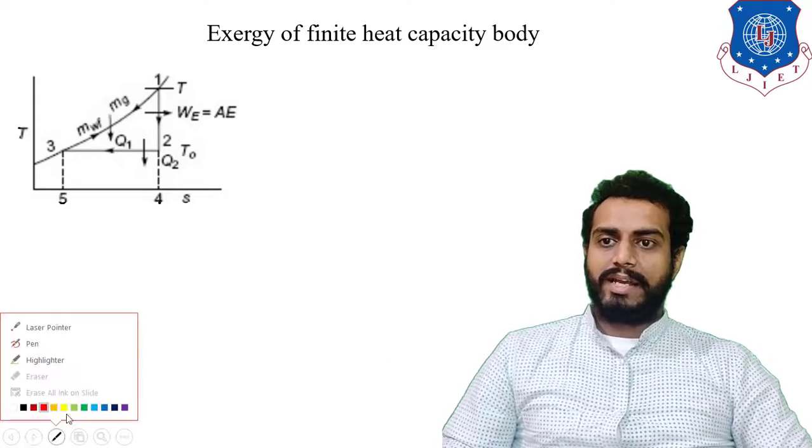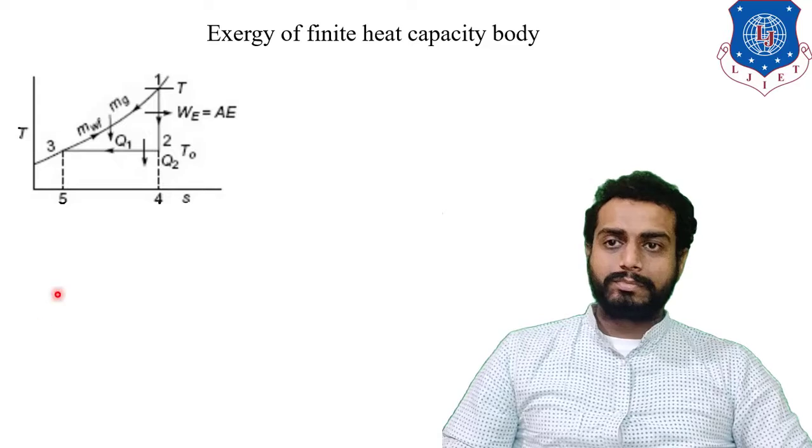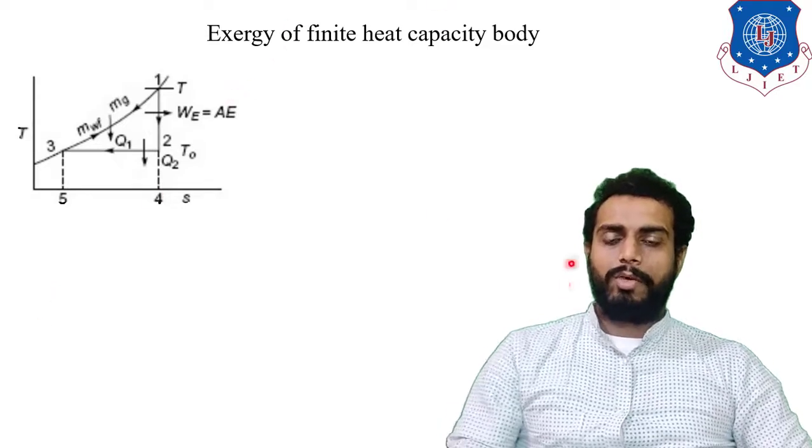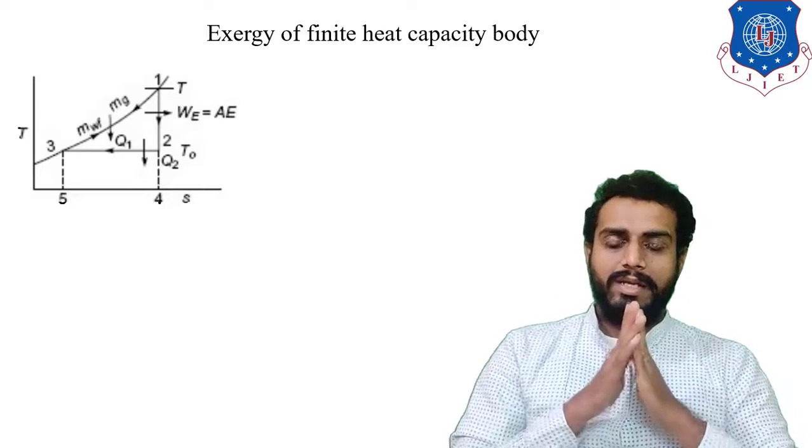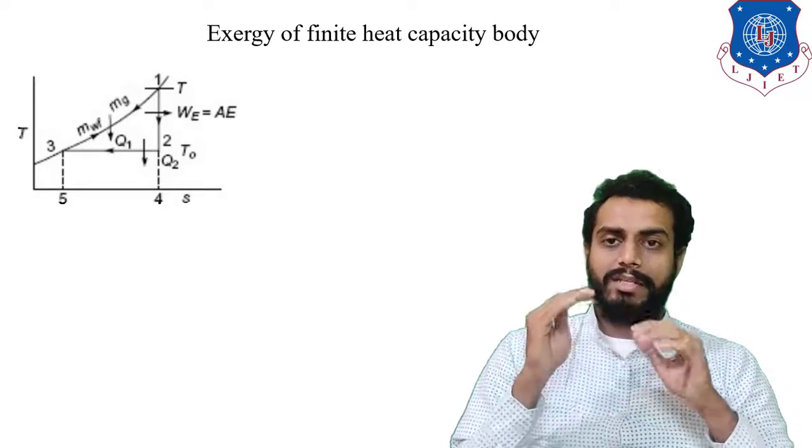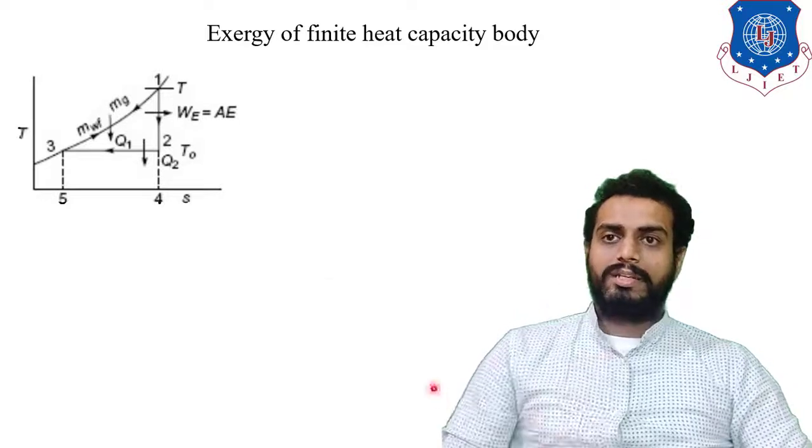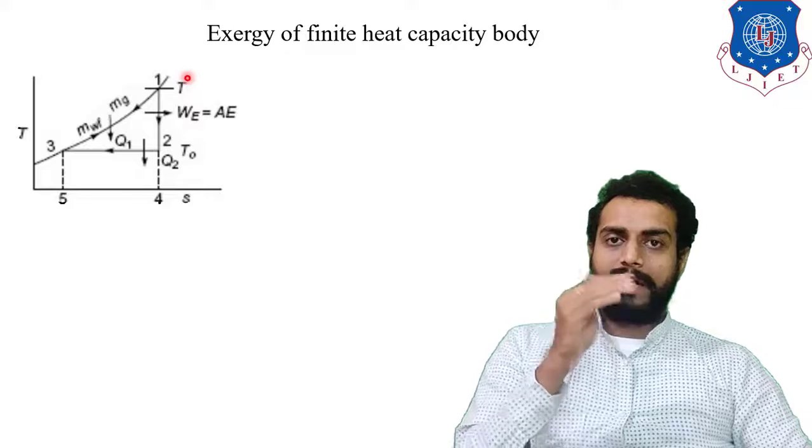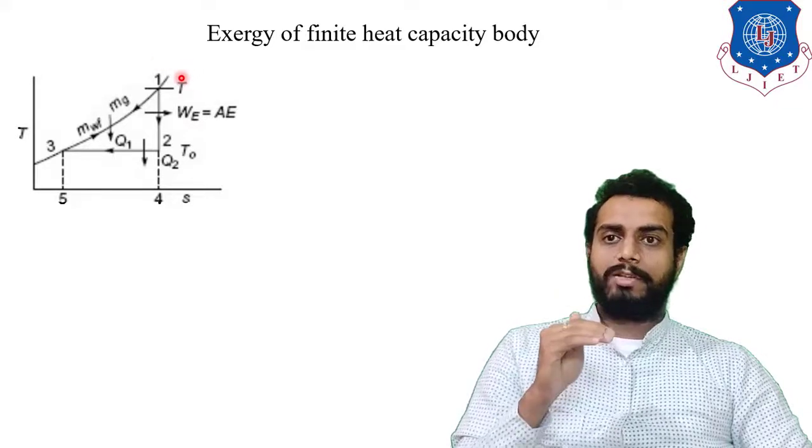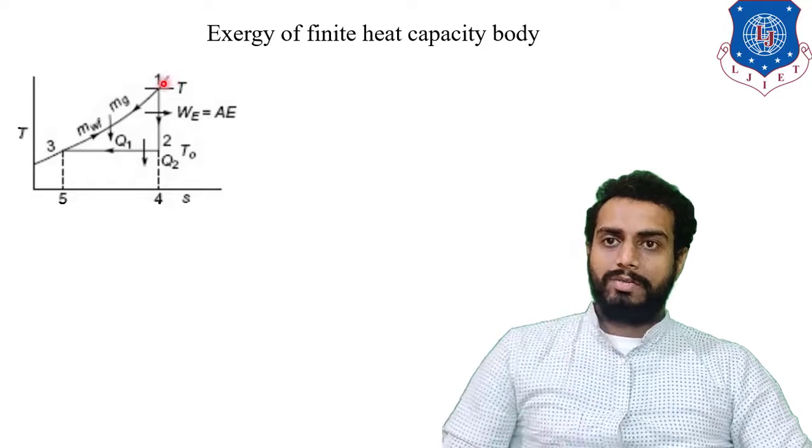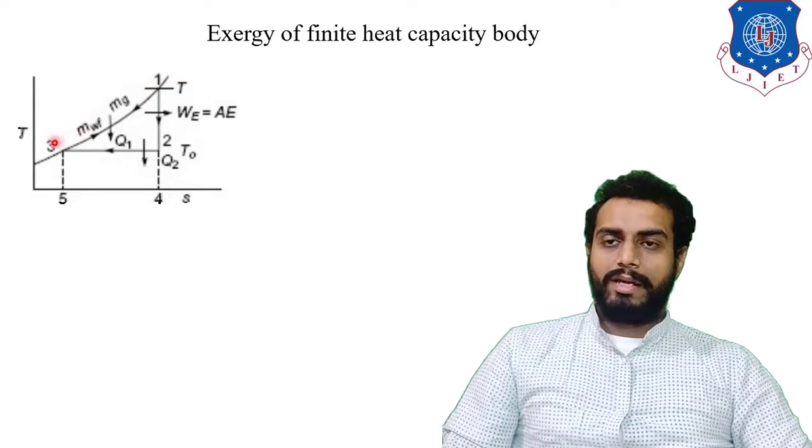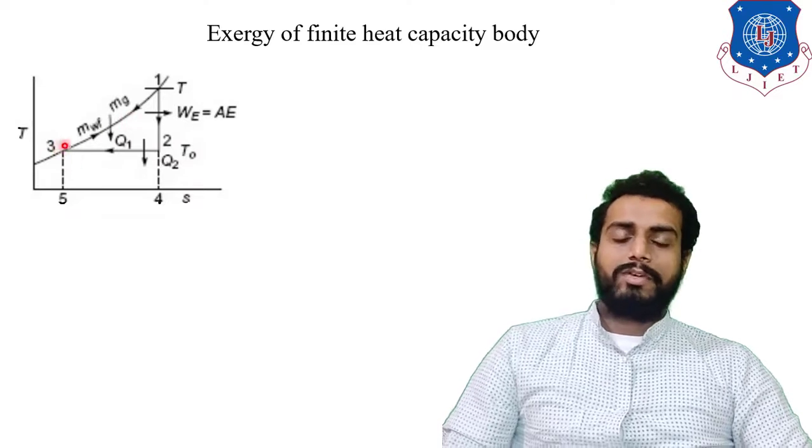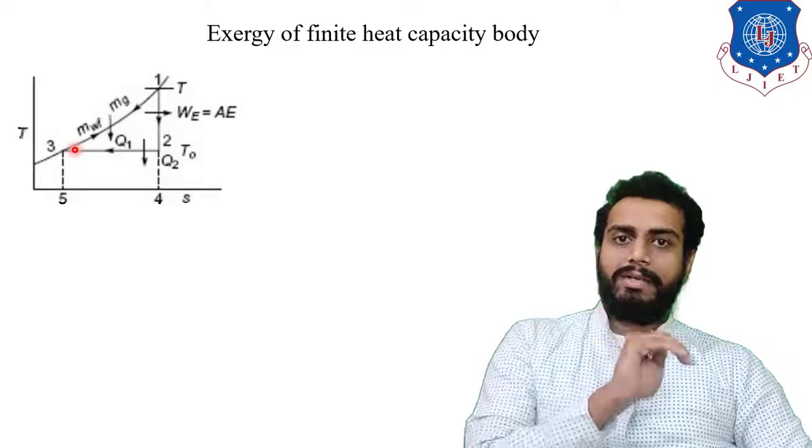So as you can see on the TS diagram we have the 1, 2, 3 process. Now this process is about what? Simple, understand this students. We have one hot gas which is at temperature T. So initially the temperature of the hot gas is T and we want to cool down this hot gas from temperature T to the temperature of T0. Okay, so this temperature is cooled down and this hot gas is cooled down at constant pressure. This T0 is the dead state temperature.